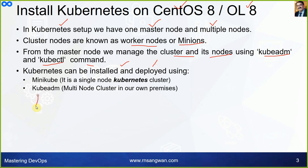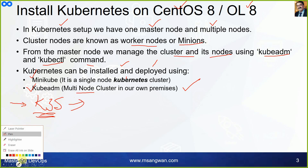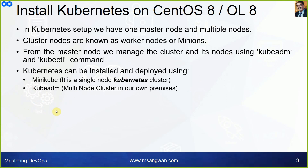Kubernetes can be installed and deployed in multiple ways. k3s is a lightweight Kubernetes where a ready script deploys the cluster in one go. You can also do a single-node cluster with minikube, or kubeadm for a multi-node cluster — which is what we are doing. k3s is suitable for training, but we are following enterprise-level installation that can scale to hundreds of nodes.